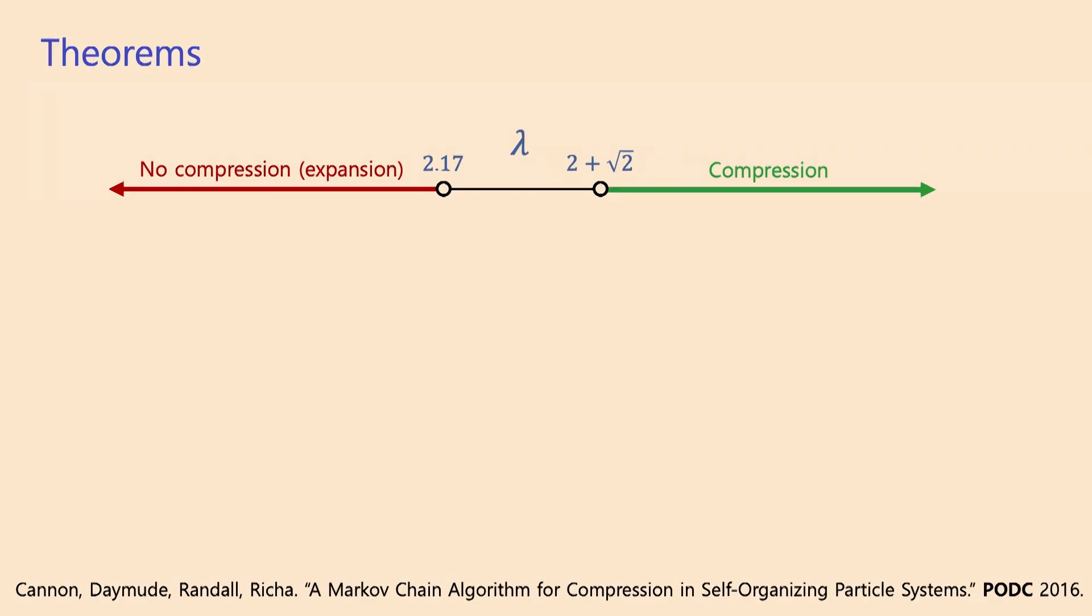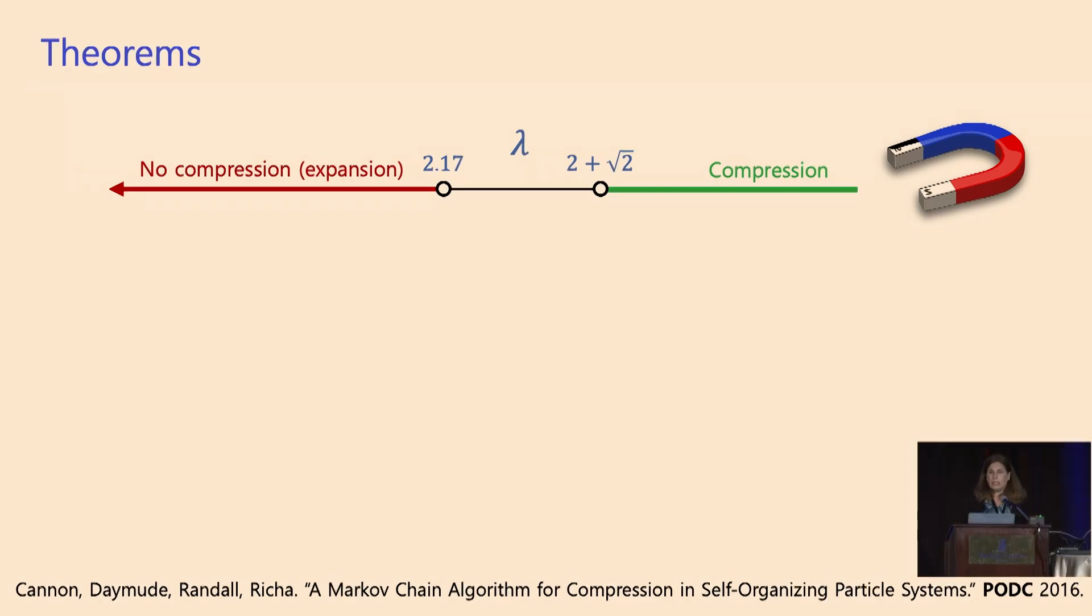And what you're seeing here is an example of a phase transition, like spontaneous magnetization. So this is actually very closely related to what's known as the Ising model in statistical physics, and if you want to learn about it, I learned about it 30 years ago from an article that Barry Sipser wrote.